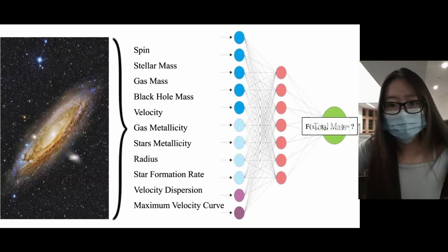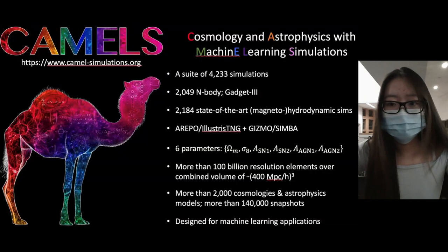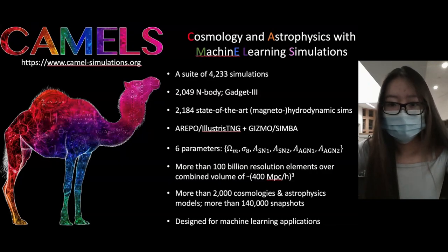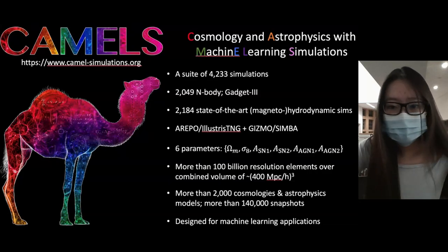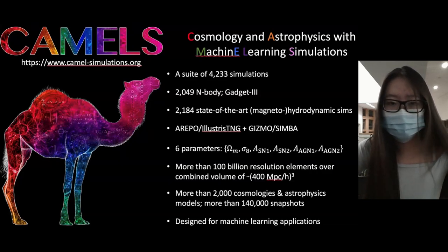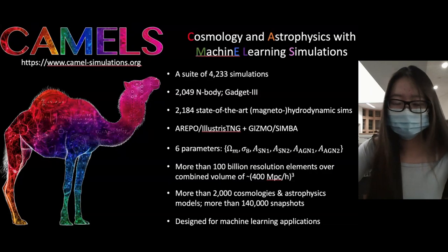We are specifically trying to predict the total subhalo mass from the 11 other properties. For this paper, we use the CAMELS simulations - the Cosmology and Astrophysics with Machine Learning Simulations - which is a large suite of 2,184 hydrodynamic simulations with 2,049 dark matter simulations. There are two simulation sets: CAMELS IllustrisTNG and CAMELS SIMBA, each containing different cosmological and astrophysical parameters.